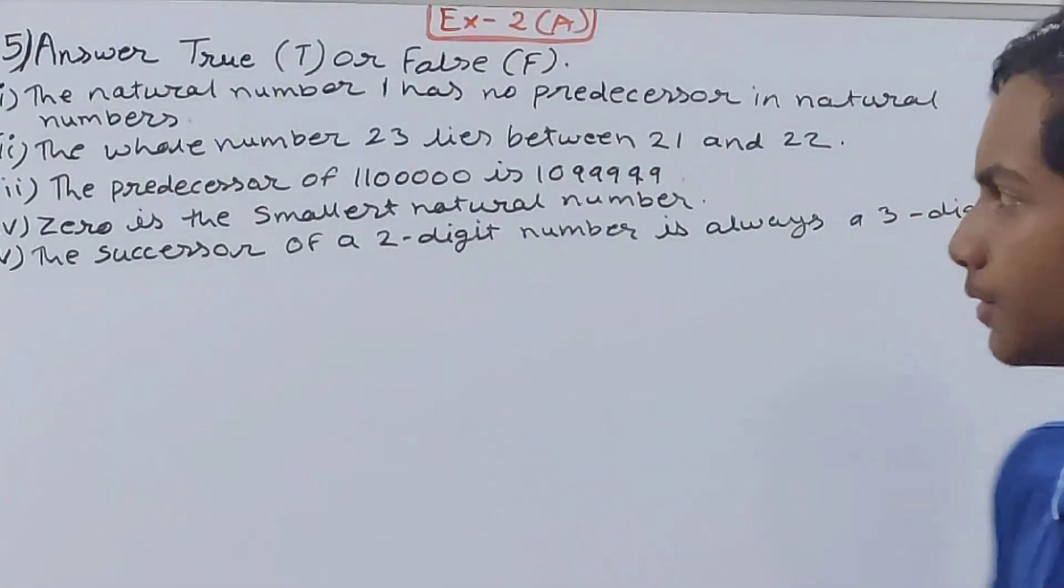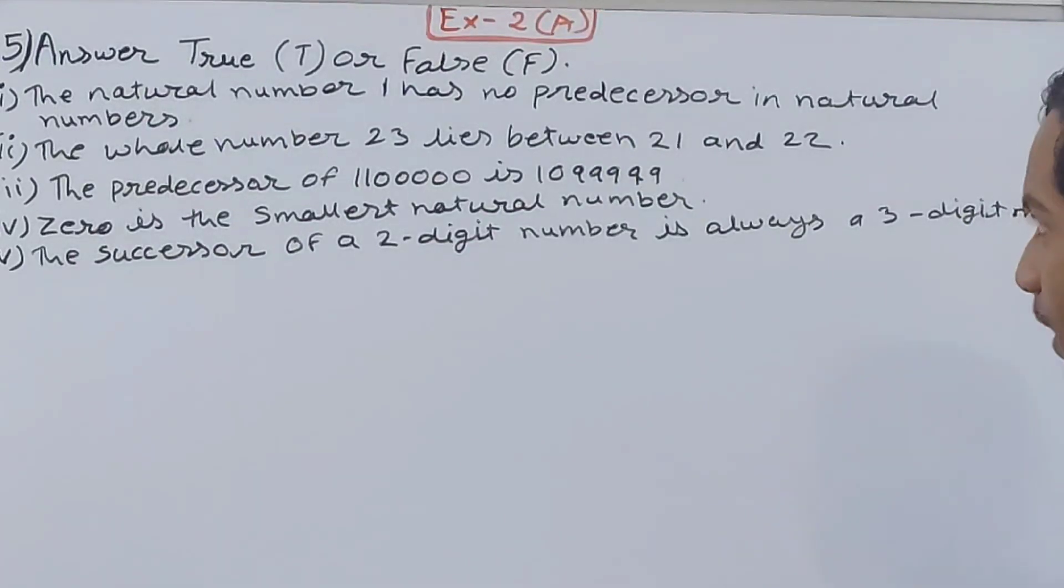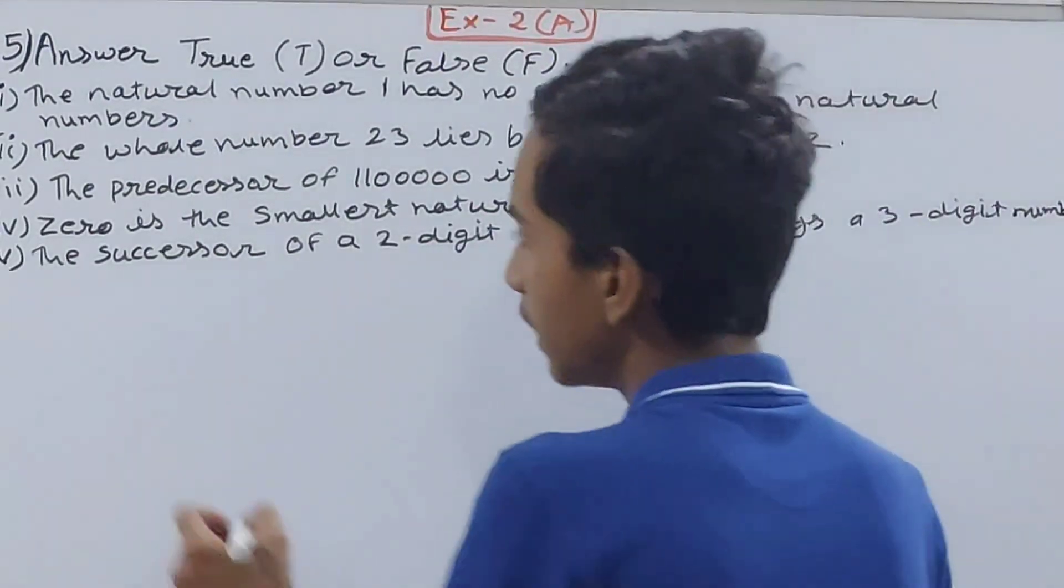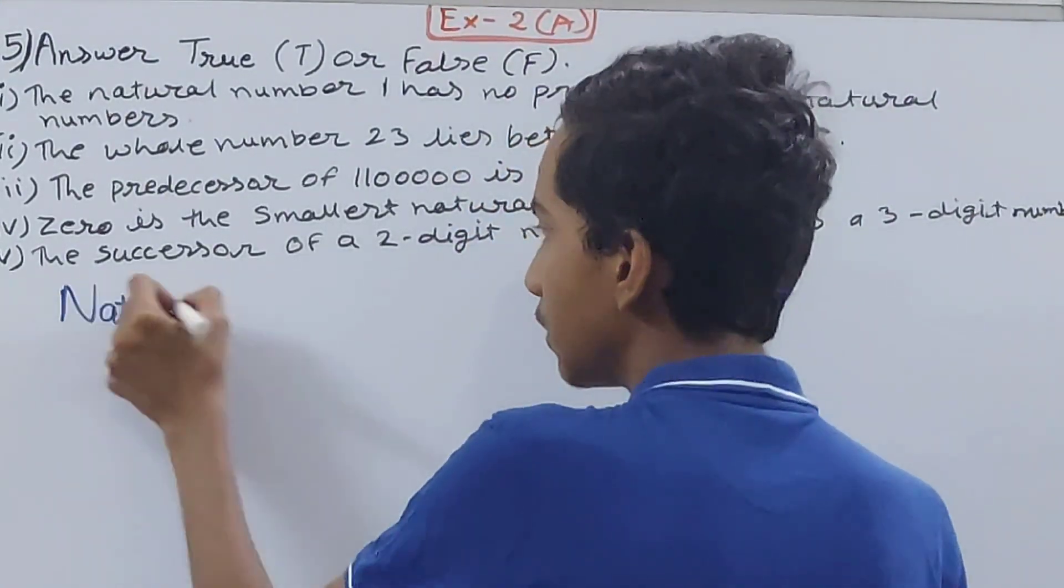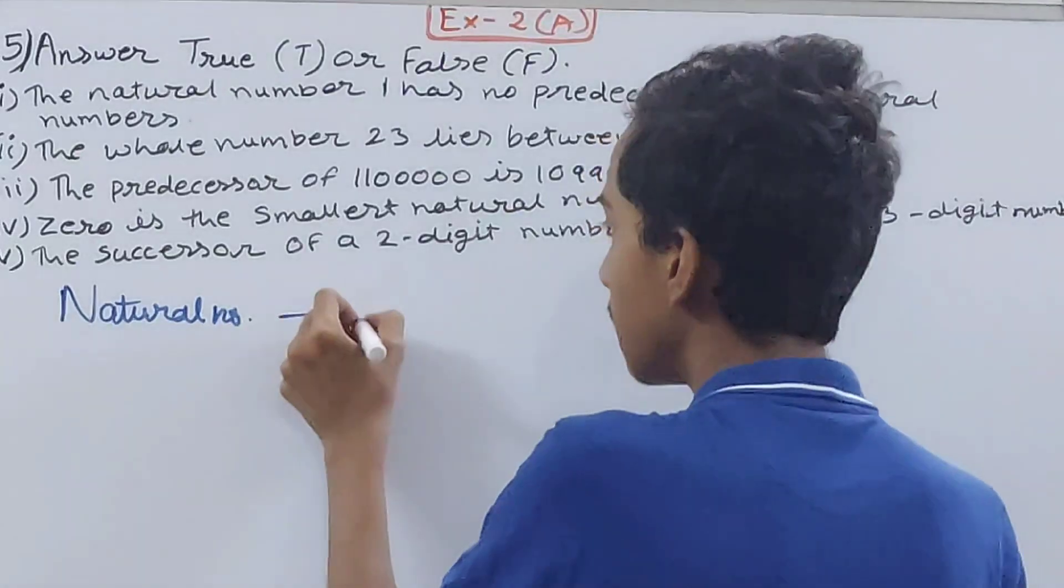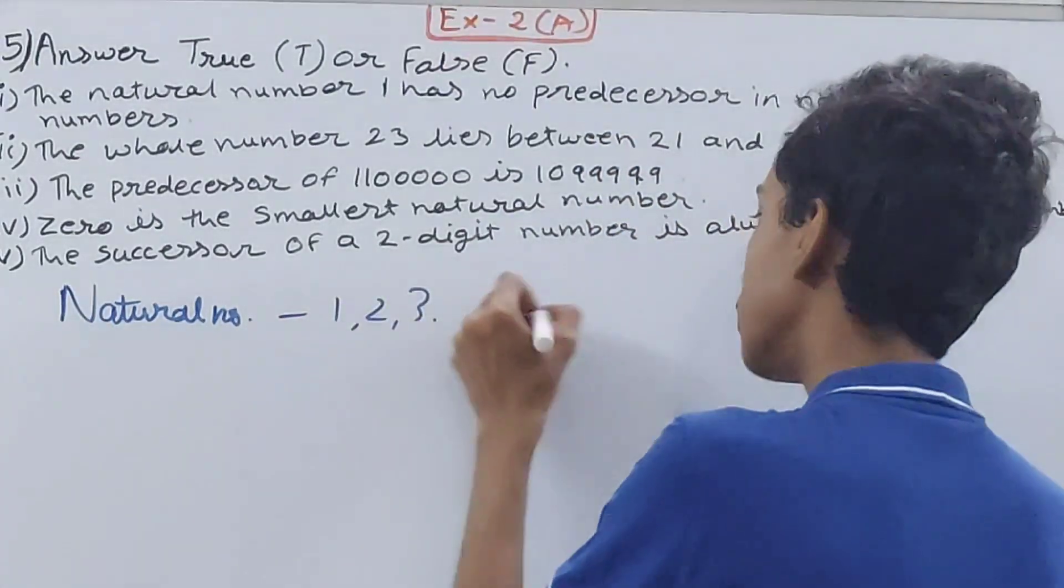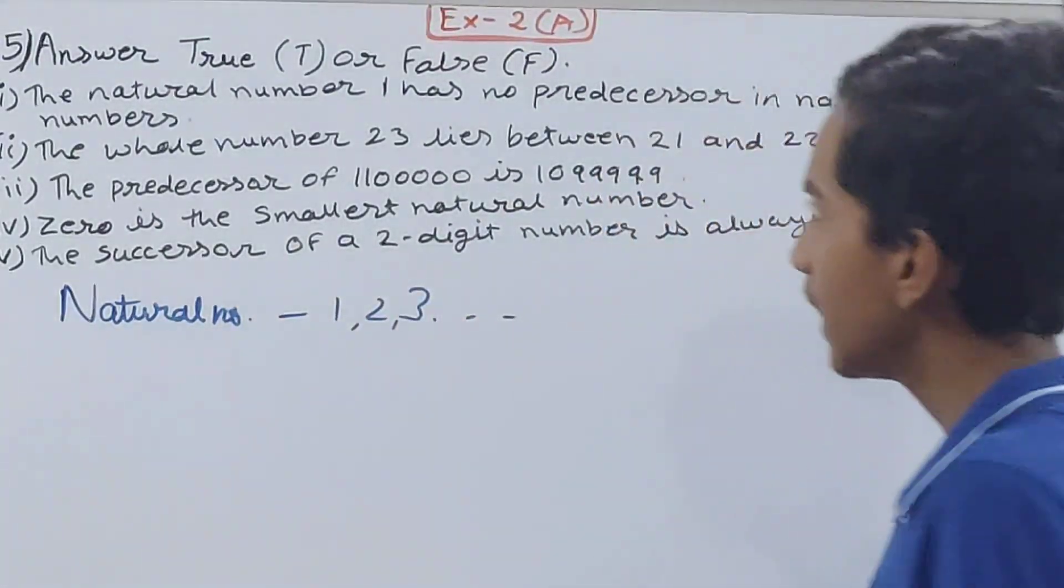The natural number 1 has no predecessor in natural numbers. So is this true or not? See, we know natural numbers begin from 1, then 2, then 3, and so on, right?